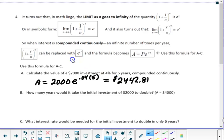So, if we compare that to the last one we had, when we were doing the 365, when N was 365, we got $2,442.78. So, the most we're going to get out of this is 3 more cents, no matter how many times we compound continuously. So, this is how banks do it now.